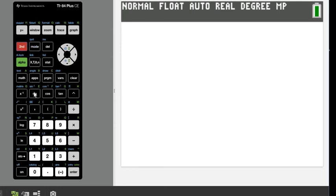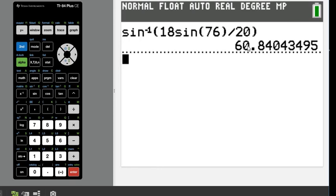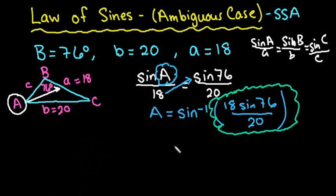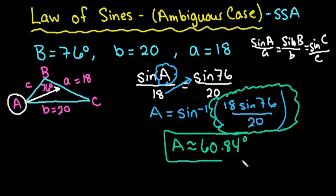I'm going to hit second and mode to get me out of that screen. And now all I have to do is type in my information. So because I want the inverse sine, I'm going to hit second and sine and then 18 sine 76. Make sure you close the parenthesis behind the sine 76 so that it knows that you are only doing the sine of 76 degrees. If you put the division sign without closing that parenthesis, it will give you the wrong answer. Divided by 20. So I simply just put the entire thing in. It is best to do it this way because if you try to round before plugging it in, you are going to get a not as precise answer. So when I hit enter, I get 60.84 degrees. So A is approximately 60.84 degrees.